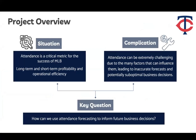Attendance is very important for the success of MLB. Accurately predicting attendance can impact both long-term and short-term profitability and operational efficiency. However, attendance can be extremely challenging to predict due to the many factors that can influence it, leading to inaccurate forecasts and potentially sub-optimal business decisions. So the key question is: how can we use attendance forecasting to inform future business decisions?